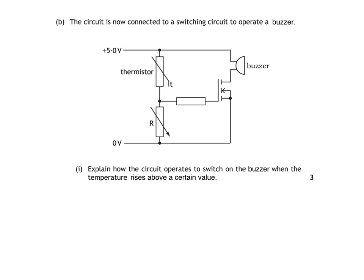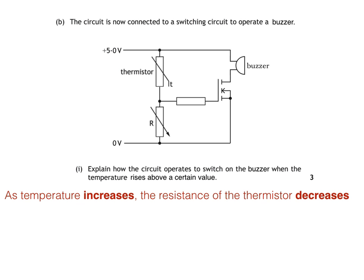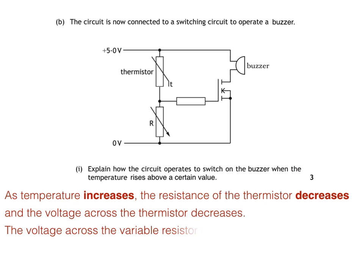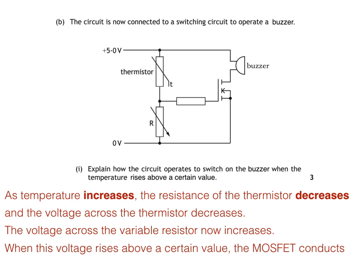Here's how it works: as temperature increases, the resistance of the thermistor decreases, which means the voltage across the thermistor decreases. Remember, it's the voltage across the bottom component that's important — it needs to increase above a certain value before the MOSFET conducts. So when the voltage across the thermistor decreases, this causes the voltage across the variable resistor, the bottom component, to increase. When this voltage rises above a certain value, the MOSFET conducts and the buzzer buzzes.